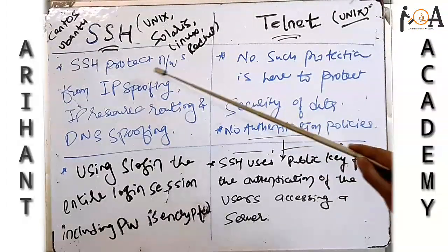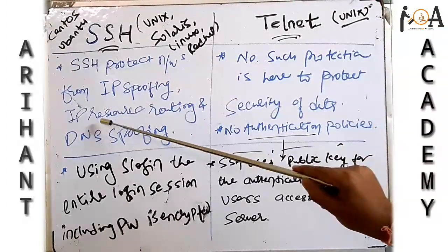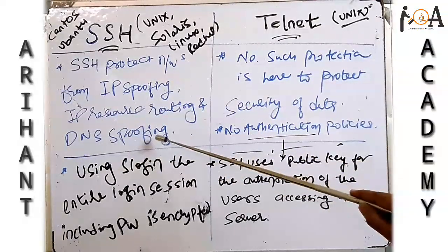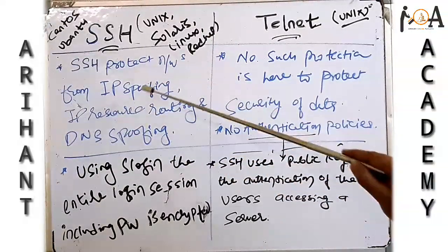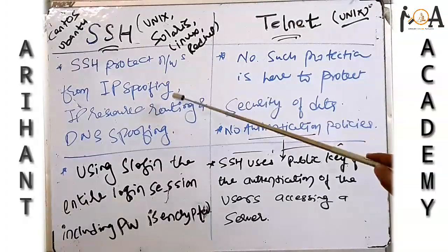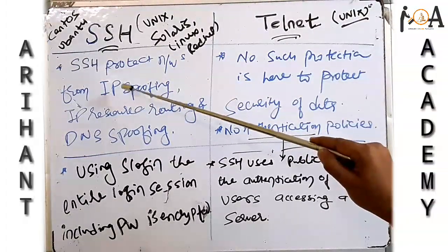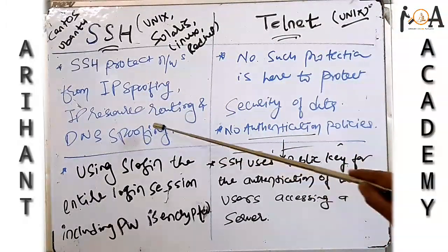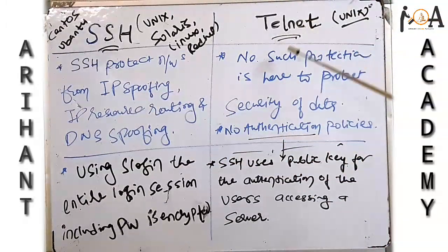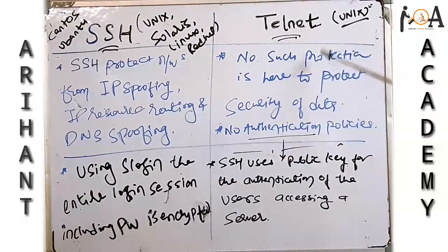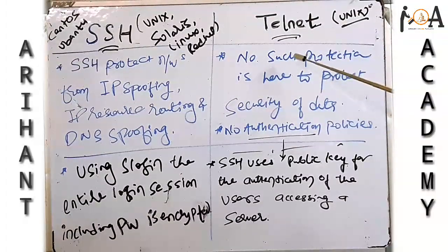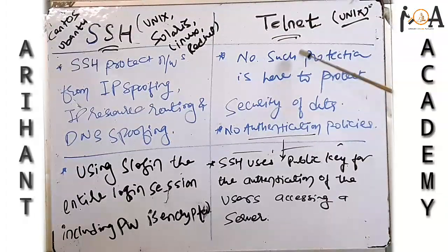SSH protects networks from IP spoofing, IP source routing, and DNS spoofing. The chances of getting attacked from outside are very low because of these protections. But in Telnet, there is no such protection in the network environment, so data privacy might be lost and it may get attacked from an external source.